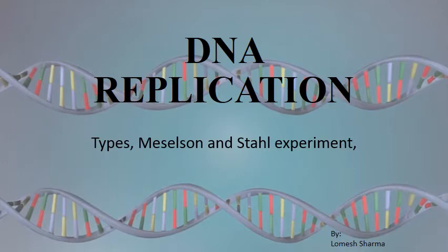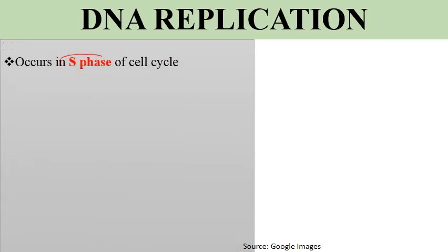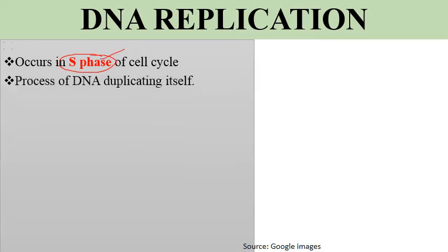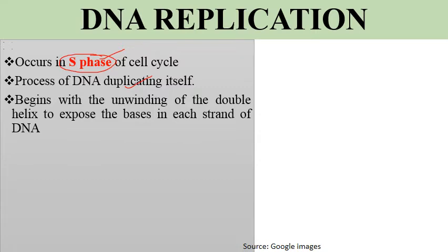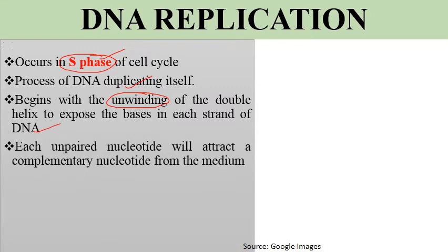DNA replication is a process by which DNA duplicates itself. It occurs in the S phase of the cell cycle. This process starts with the unwinding of the double helix to expose the bases in each strand of DNA.